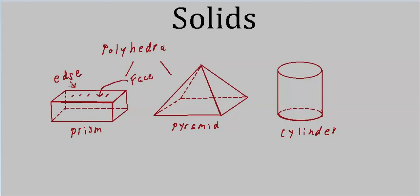This polygon, which forms what some people might call a side on something like a rectangular box, is called a face. This is a face, this is a face, and there are also three faces we can't see, formed by the hidden lines — a face over here, a face at the back, and another face. Over on the pyramid, this triangle is a face, this is a face, the hidden square is a face, and the two triangles in the back are both faces.